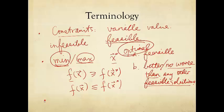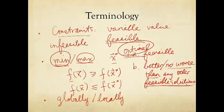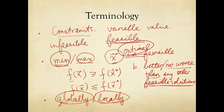We also distinguish between globally optimal — no worse than any feasible solution anywhere — and locally optimal — no worse than feasible solutions in a small neighborhood around that point. The definition just discussed is global optimality. These terminologies — feasible solution, globally optimal, locally optimal solution — will be used again and again in future lectures.